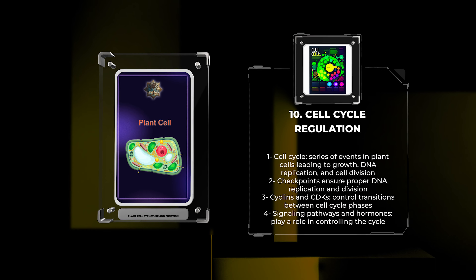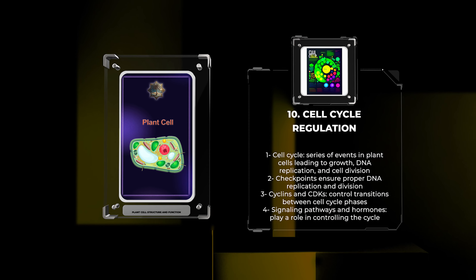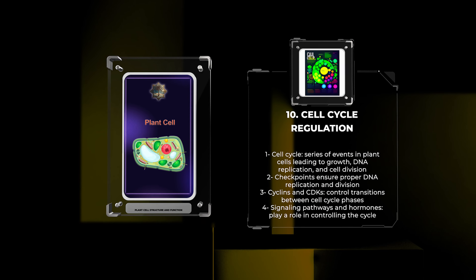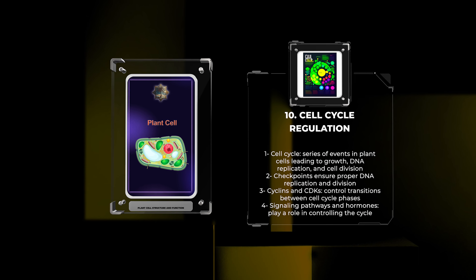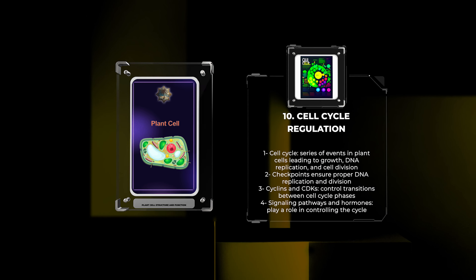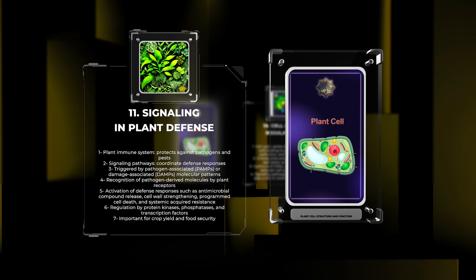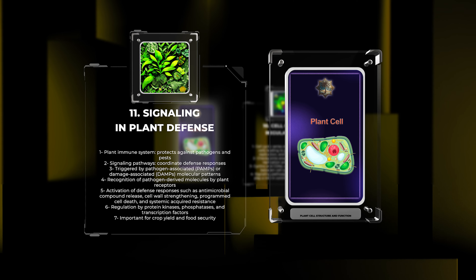The cell cycle is a series of events in plant cells that leads to growth, DNA replication, and cell division. Checkpoints throughout the cycle ensure proper DNA replication and division. Cyclins and CDKs control the transitions between cell cycle phases. Signaling pathways and hormones also play a role in controlling the cycle. Disruptions in cell cycle regulation can cause abnormal cell division and health issues.